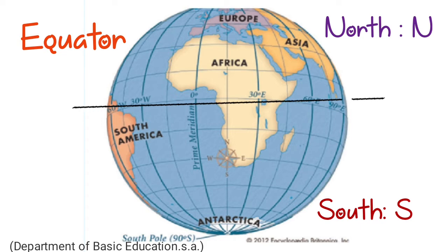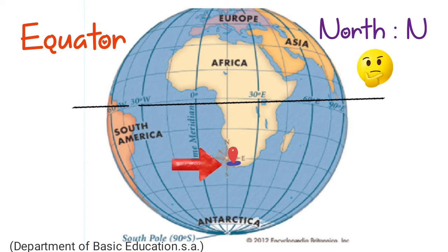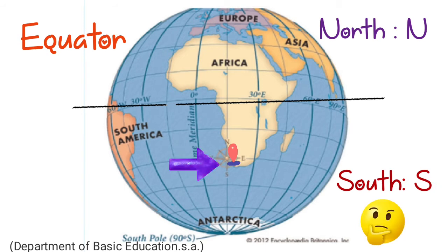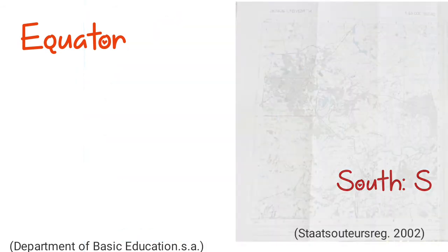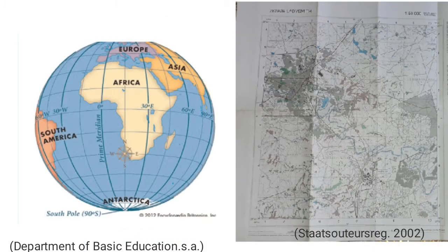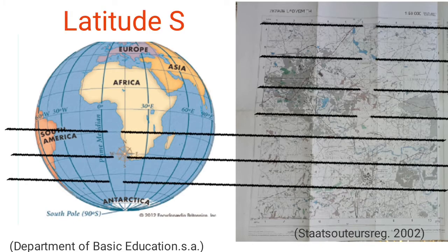Now let's look at South Africa. Is South Africa north of the equator or south of the equator? Yes, you are right — South Africa is south of the equator. Hence why when you have a map of South Africa, your latitude will always be south.